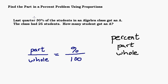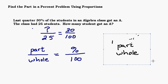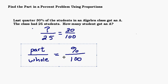So in our case, we have 30% of the students in an algebra class that got an A. So if there were 100 students, that would mean that 30 out of 100 would have gotten an A. But there's not 100 students. There's only 25 students in the class. Now is this the part or the whole? Hopefully you recognize that's the whole. That's the entire number of people in the class. And we want to know how many out of 25 would be the same as 30 out of 100.